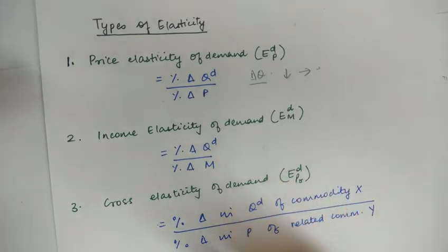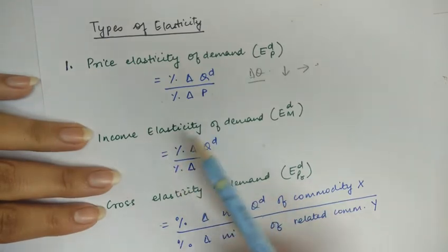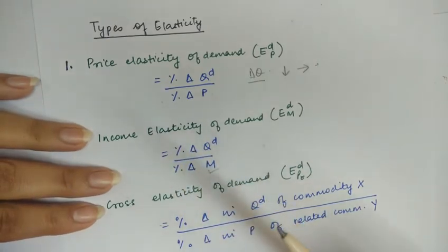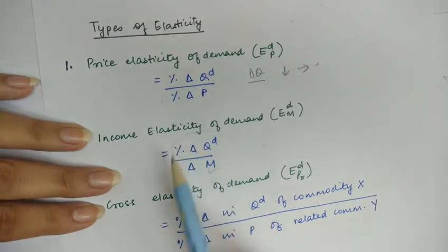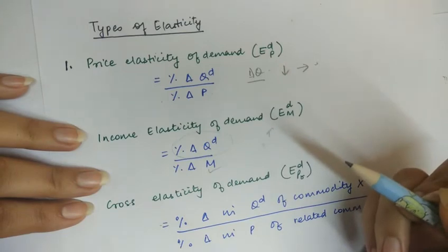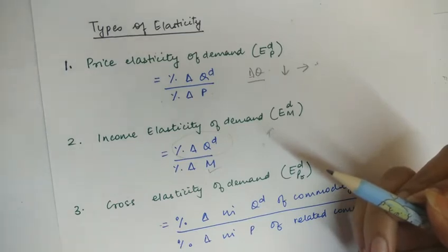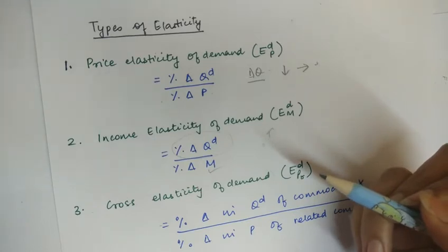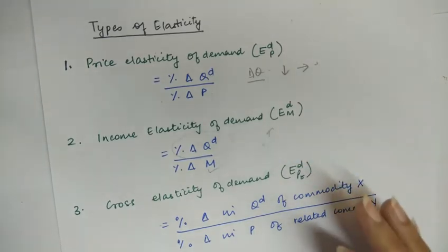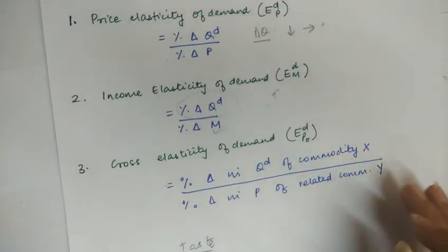Now let us move on to income elasticity of demand. It reflects the reaction of demand due to a change in the income of the consumer. If the demand reacts very strongly to a change in income, we call the income elasticity of demand high. On the other hand, if the quantity demanded does not change much due to a change in income, we call that inelastic demand.